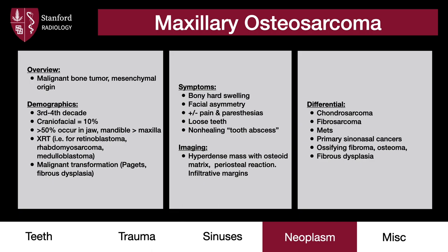Osteosarcoma is a malignant bone tumor of mesenchymal origin. It has associations with radiotherapy from treating prior cancers, and also secondary transformation from Paget's disease or fibrous dysplasia. Compared to its long bone counterparts, osteosarcoma in the jaw region typically occurs about 10 to 20 years later, in the 3rd to 4th decades. Symptoms include bony hard swelling with facial asymmetry, loose teeth, and a non-healing tooth abscess. The imaging features are similar to osteosarcoma in the long bones, and the differential involves a wide variety of other malignancies.